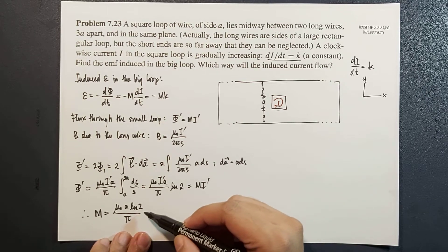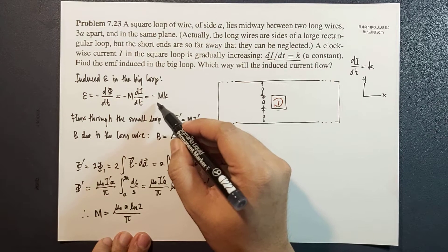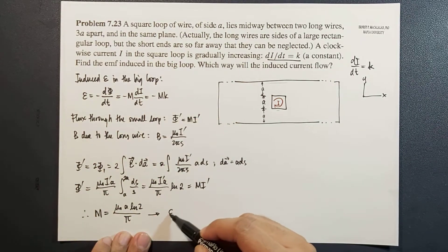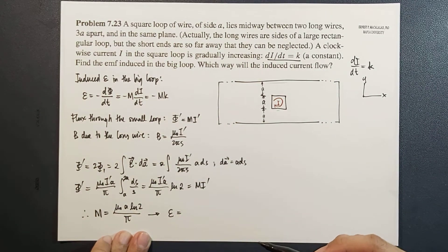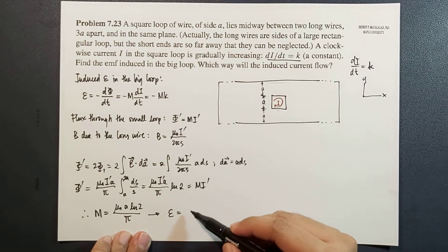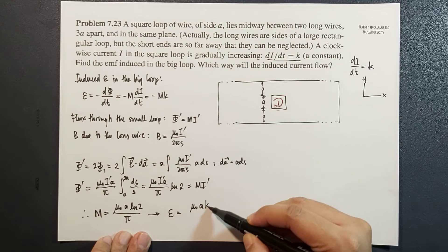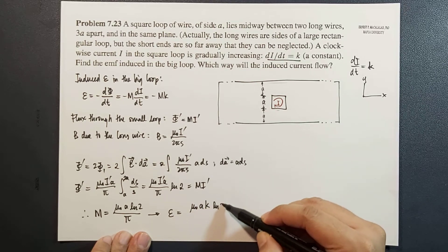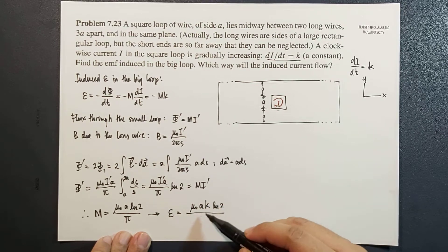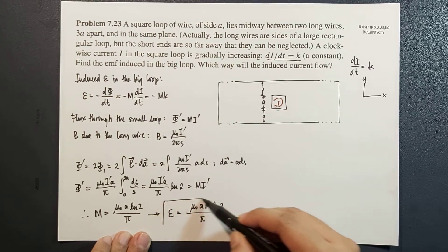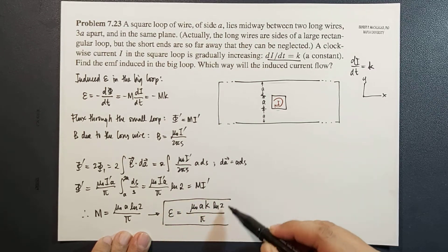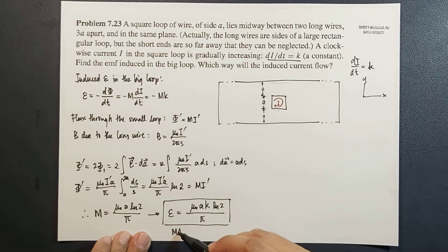Using this mutual inductance here, the induced EMF, therefore, will now be equal to mu naught A K ln 2 over pi. Here, we're looking for the, we're just determining the magnitude.